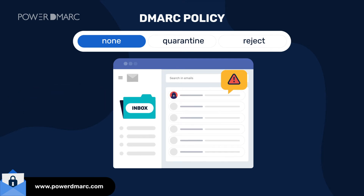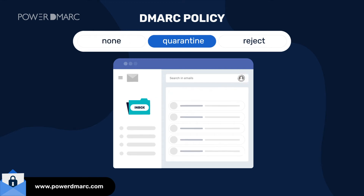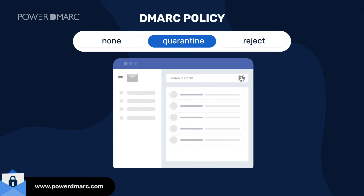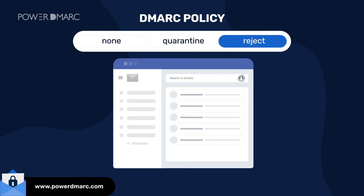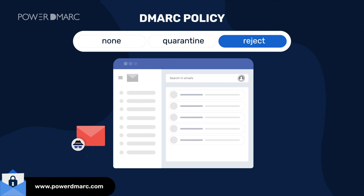Now we move towards more enforced policies. DMARC Quarantine policy helps you quarantine emails that fail DMARC for your receivers to review them later. And finally, the DMARC Reject policy provides maximum enforcement and protection against spoofing by outright rejecting unauthorized emails from reaching your clients.